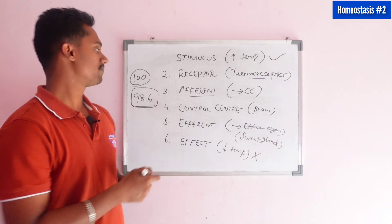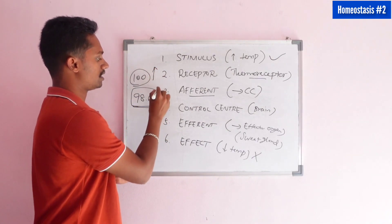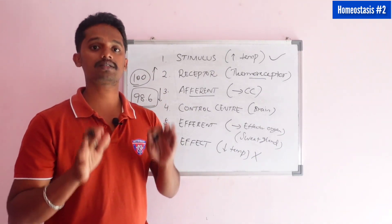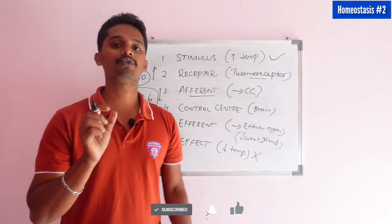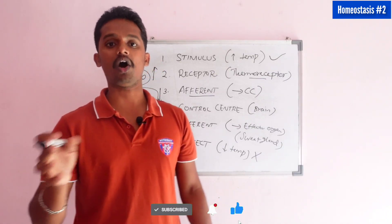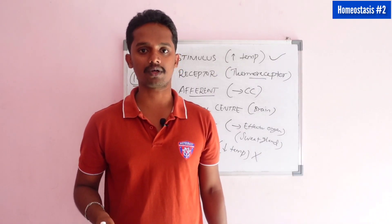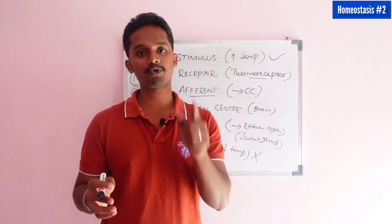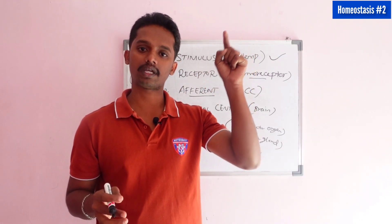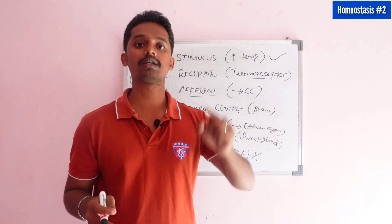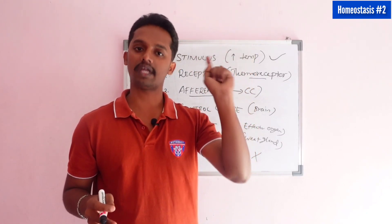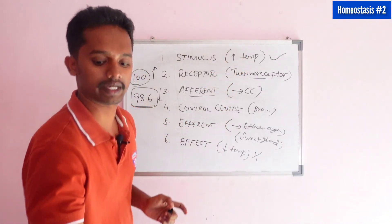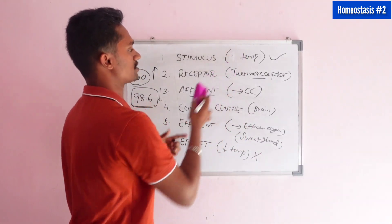This is called homeostasis — specifically, this is a negative feedback mechanism. The negative feedback means the response reduces or opposes the original stimulus. The temperature was increased; the response brings it less. That is negative feedback.